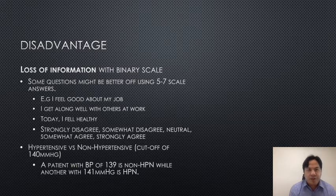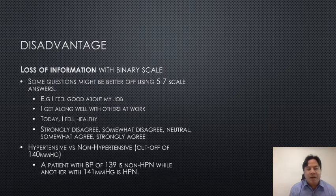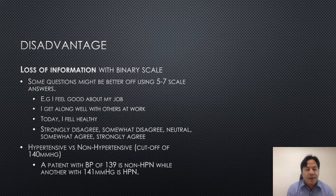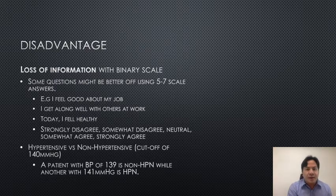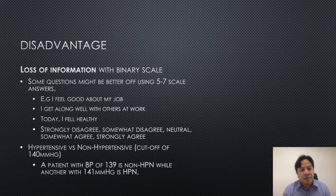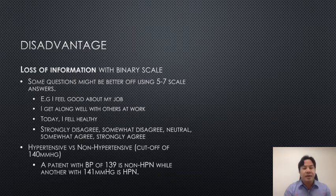The main disadvantage of a binary scale is that there is loss of information. Some questions might be better off using 5-7 scale answers. For example, 'I feel good about my job,' 'I get along well with others at work,' or 'Today, I feel healthy.' These questions you can answer with a yes or a no, but it might be better if you ask them if they strongly disagree, somewhat disagree, are neutral, somewhat agree, or strongly agree. Another example would be when you want to classify a patient as hypertensive or non-hypertensive, instead of using the categorical scale of their blood pressure itself — what is the difference of a patient with 139 blood pressure, labeled as non-hypertensive, to a patient with a blood pressure of 141, labeled as hypertensive? So there is a little bit of a loss of information.